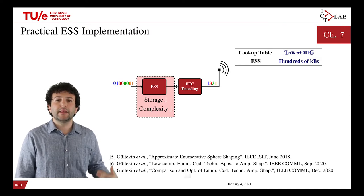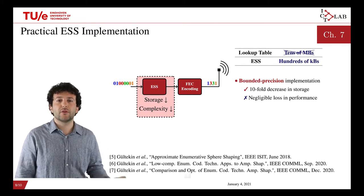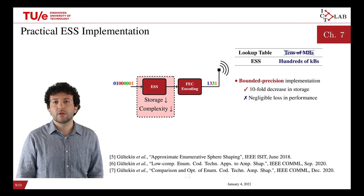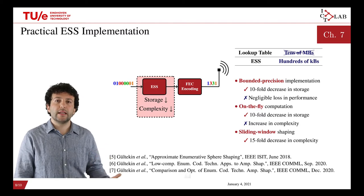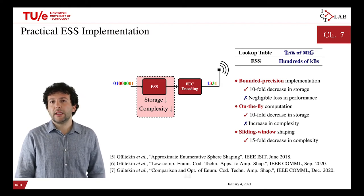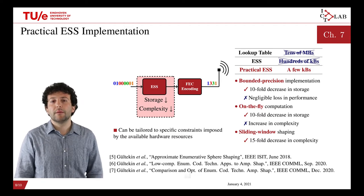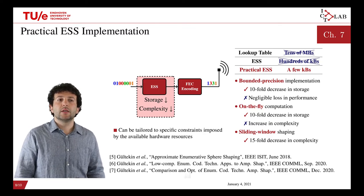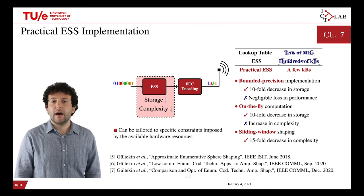We then focused on efficient implementation of ESS and its low-complexity realization techniques, proposing three different algorithms. First, a bounded-precision implementation technique that greatly decreases storage with negligible loss in performance. Second, an on-the-fly computation technique that further reduces storage with a slight increase in complexity. Third, we proposed the sliding window shaping architecture, which decreases the complexity of ESS by more than tenfold. Combined, these three techniques reduce the required storage for ESS from hundreds of kilobytes to just a few kilobytes, and allow ESS implementation to be tailored to the specific resources provided by available hardware.